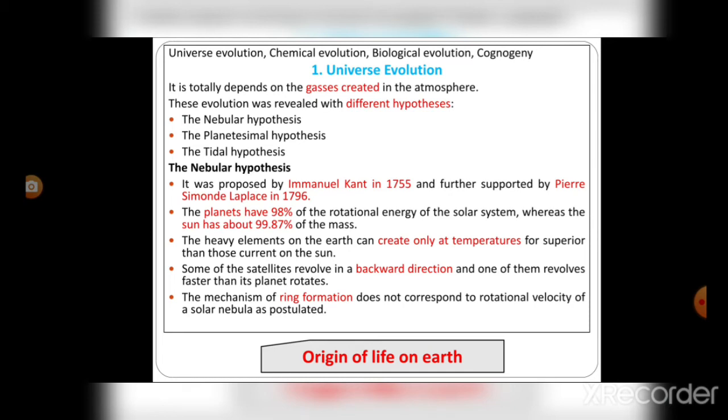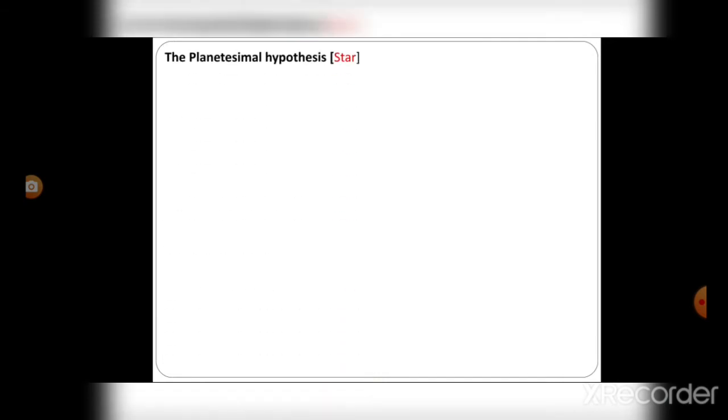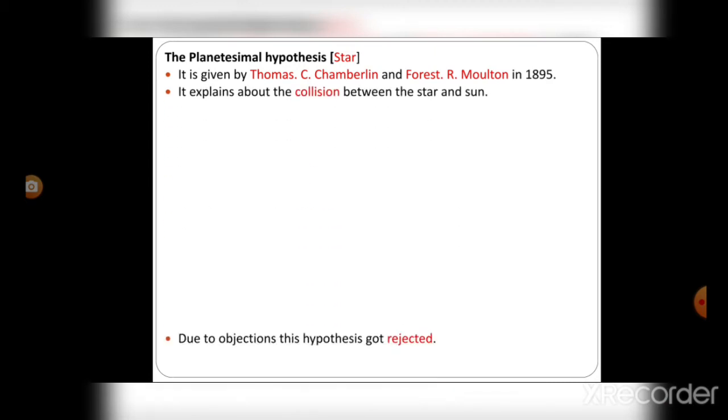The next hypothesis is the Planetesimal hypothesis, also called the Star hypothesis. This hypothesis was given by Thomas Chamberlin and Forest Moulton in 1895. It explains the collision between the star and sun.